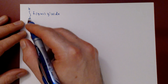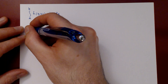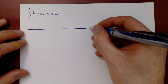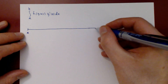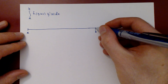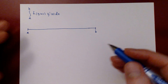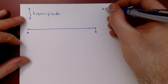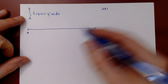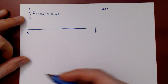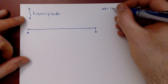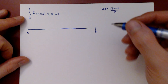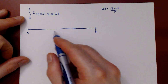Let's take a partition of the interval from A to B. To simplify the setup, we will take a uniform partition, so delta x will be the width of each interval, given by the total length of the interval divided by n, where n is the number of rectangles.